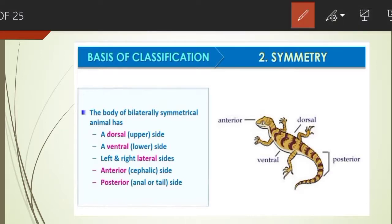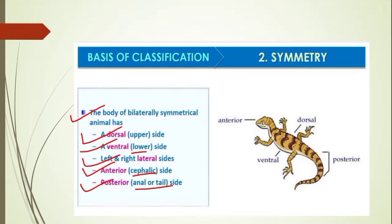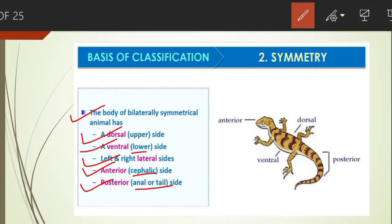The body of bilaterally symmetrical animals has a dorsal side (upper), a ventral side (lower), left and right lateral sides, an anterior or cephalic side (head end), and a posterior or anal or tail side. As seen in the diagram, these are the sides observed in bilaterally symmetrical animals.